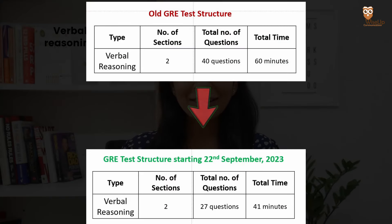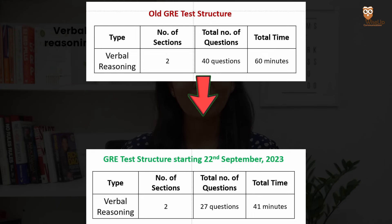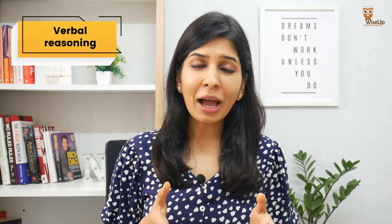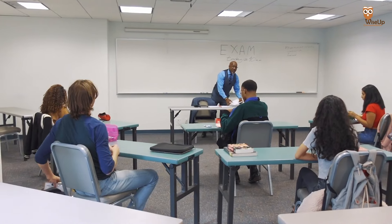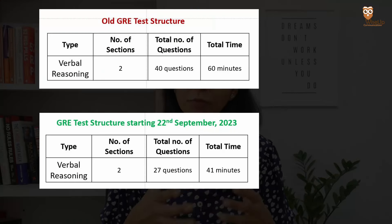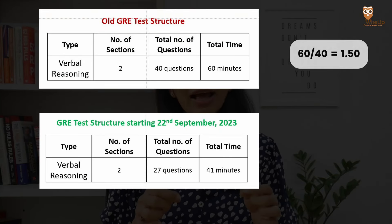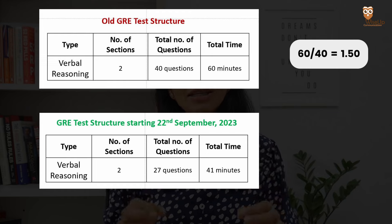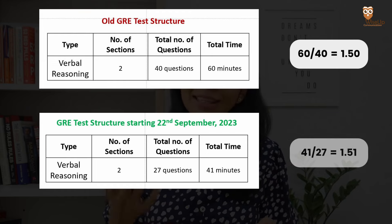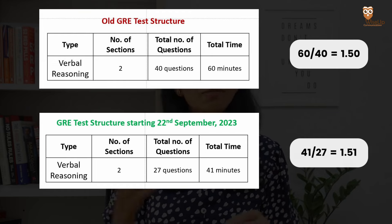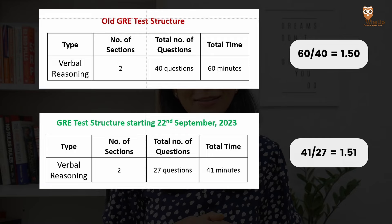So if you see, nearly one third of the questions have been removed. One doubt you may have is whether the time to attempt these questions has been proportionally reduced. Well, that's not true — if you do simple math, you still have nearly a minute and a half to attempt each question, which was the same in the previous format as well.